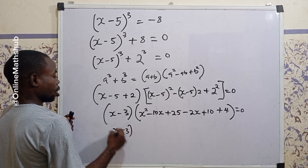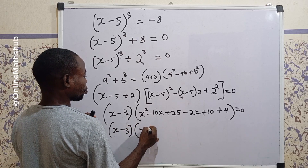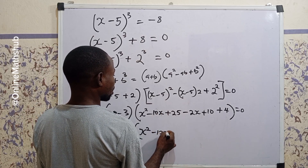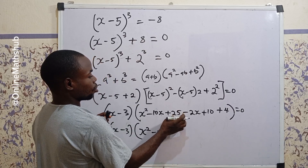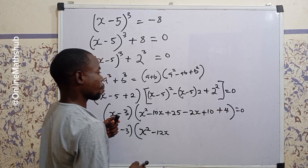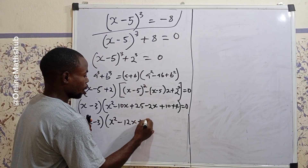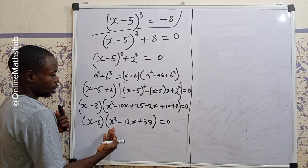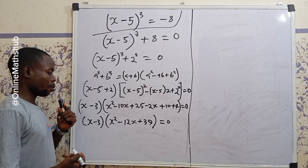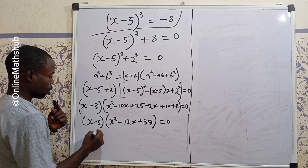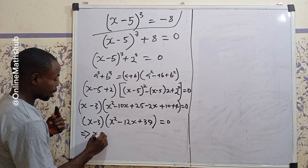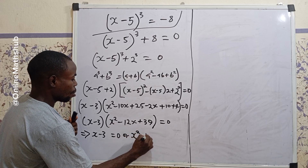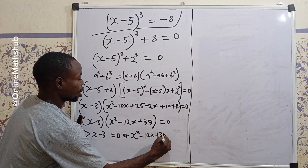Simplifying the contents of the second bracket: the first factor is (x minus 3), and inside the bracket we have x squared, then minus 10x minus 2x giving minus 12x, and then 25 plus 10 plus 4 equals 39. So we have (x minus 3)(x squared minus 12x plus 39) equals 0.